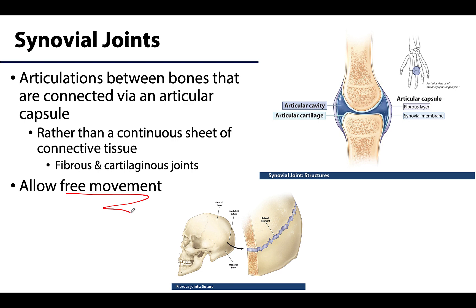Synovial joints are unique in that they articulate or join bones not by a solid sheet of connective tissue, but rather by what's referred to as an articular capsule — a sleeve of connective tissue that envelopes the articulating bones, thus connecting the sides of the articulating bones. This is not the solid sheet like you see in a suture, which is a fibrous type of joint. This organization allows for a greater range of motion in synovial joints than in other types.